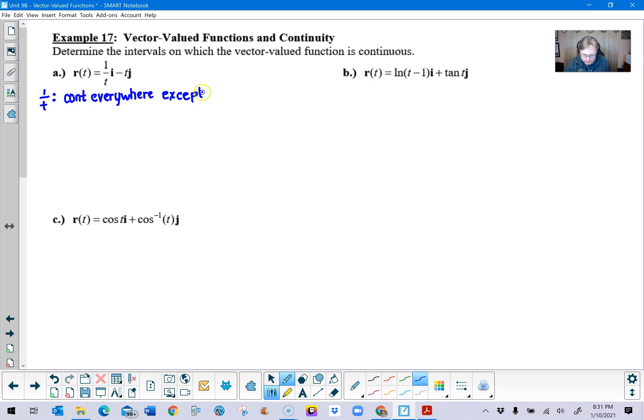And you can write it up, you can think of it a lot of different ways. Negative t is the other component and we know that that guy is continuous everywhere. If you want, you can say negative infinity to infinity if that helps you, besides saying everywhere.